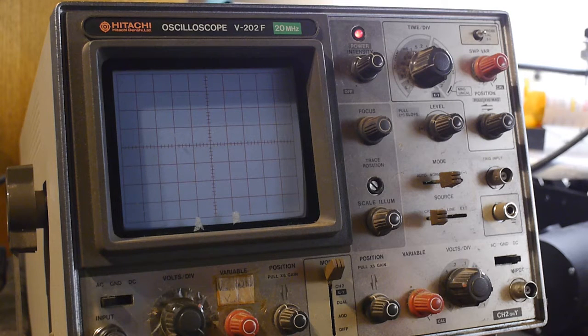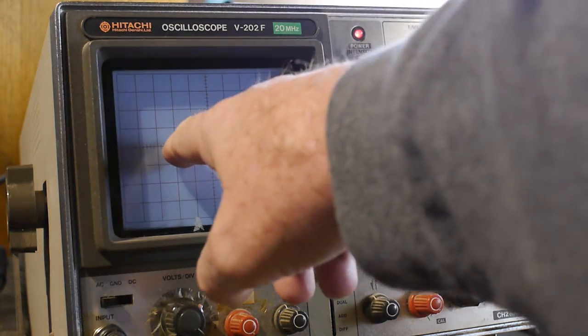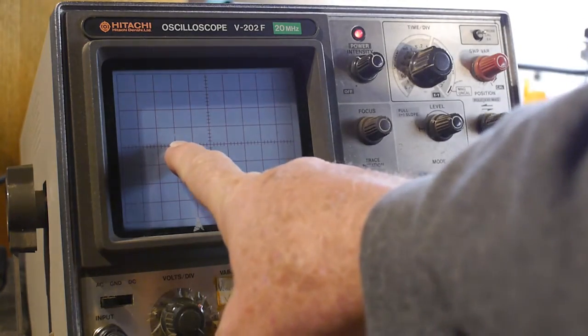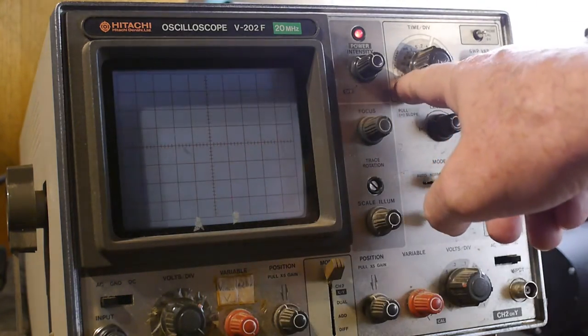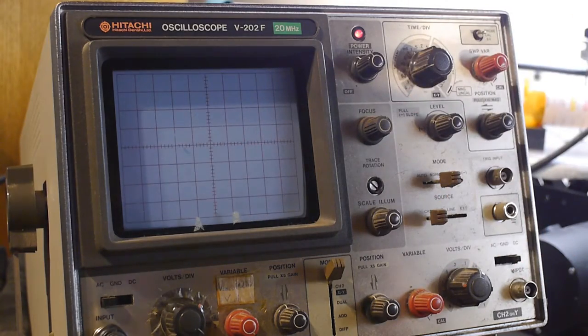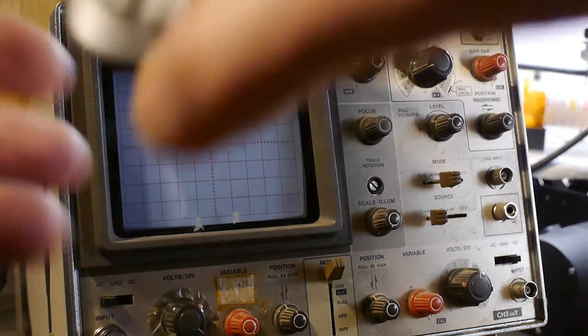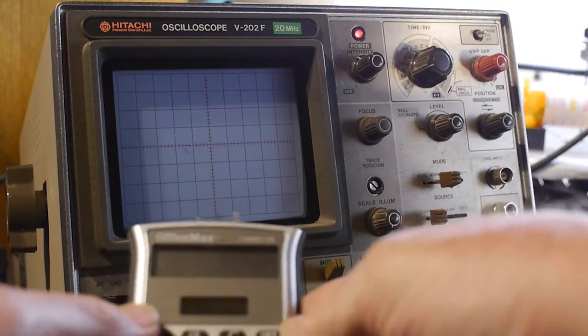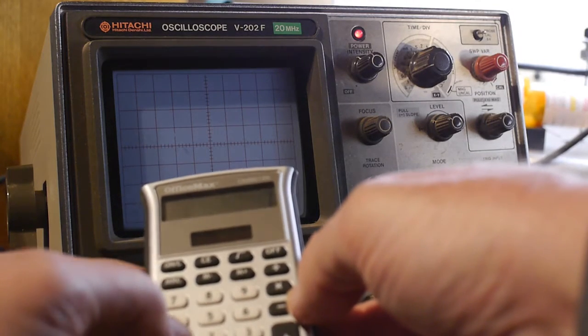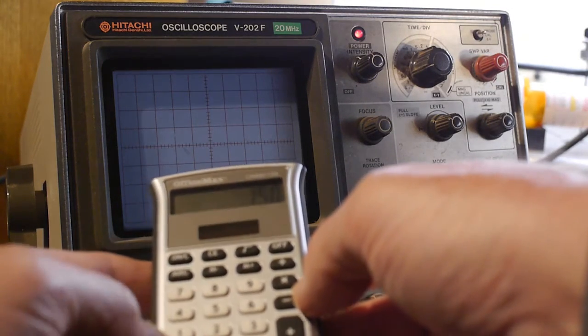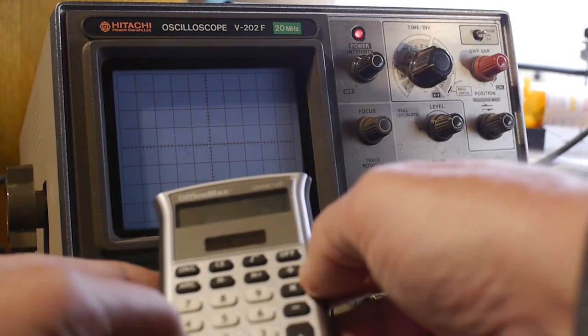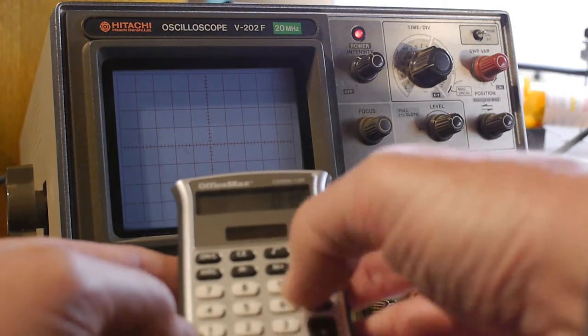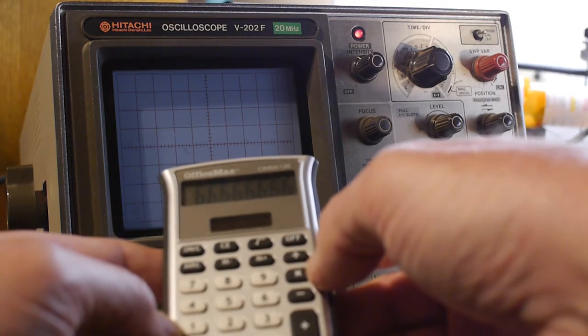Here's an attempt at a test firing of the shutter with the shutter speed detector. You can see the scope screen, and it looks like it was about three divisions on the screen. At 50 milliseconds per division, that's 150 milliseconds. When you do the math—150 divided by a thousand, invert it—that's about one-seventh of a second approximately.